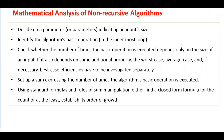If it is in the inner loop, we have to identify how many times that basic operation is going to be performed. The third step is to check whether the number of times the basic operation is executed depends only on the input size or on any extra parameters. If it depends on additional properties, then we have to calculate the worst case, average case, and best case efficiencies separately. If it depends only on the input size, then calculating the worst case efficiency alone is enough.